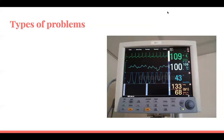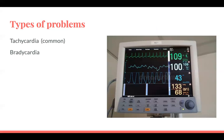So basically, different types of problems that you can have. The first and most common is tachycardia — you're asked to review a patient with a heart rate above 100. The next one is bradycardia, less than 60.